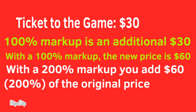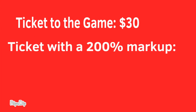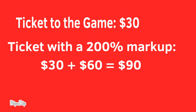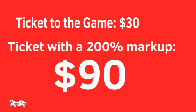With a 200% markup, you add $60, or 200% of the original price. If you add a 200% markup to a $30 ticket, you'd have to add $60 to the $30, and the ticket after a 200% markup would cost $90.